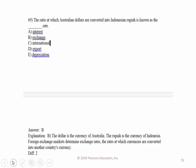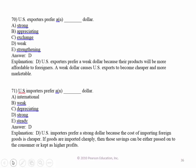The ratio at which Australian dollars are converted into Indonesian rupiah is known as the exchange rate. U.S. exporters prefer a relatively weak dollar so that those exports will be cheaper in other countries and they'll be able to acquire that foreign currency more cheaply. Importers prefer a relatively strong dollar so that we can acquire those other currencies more cheaply, bringing down the price of those imports.